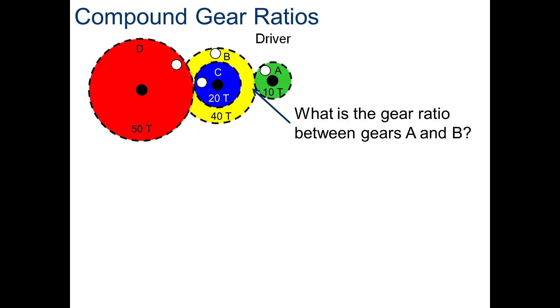So, if we look at this, what is the gear ratio between A and B? A being the in, B being the out. Pause the video, do the calculation. If you got 4 to 1, you are correct.